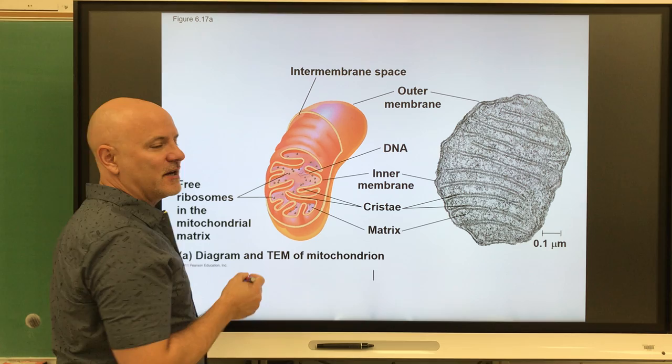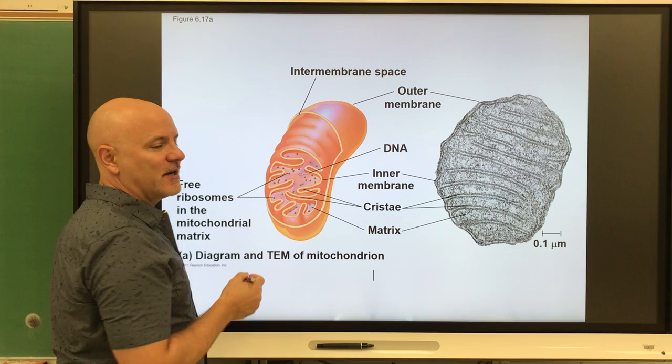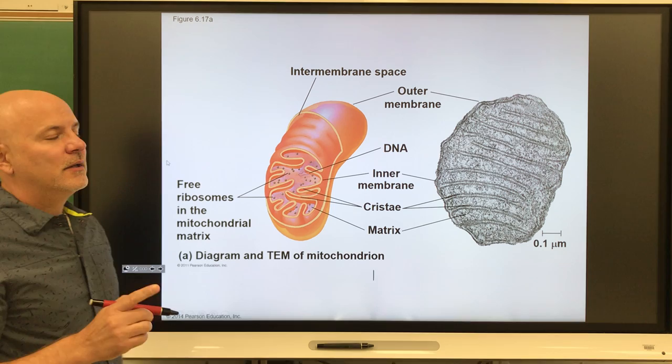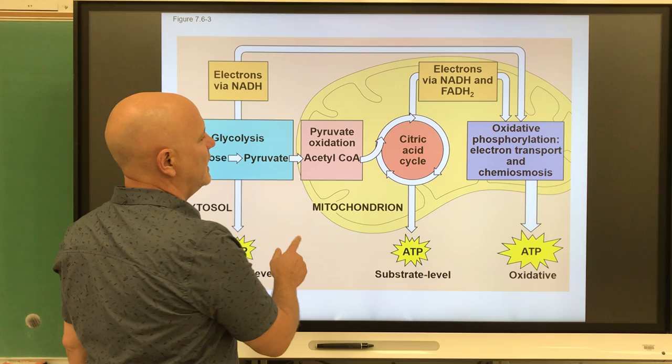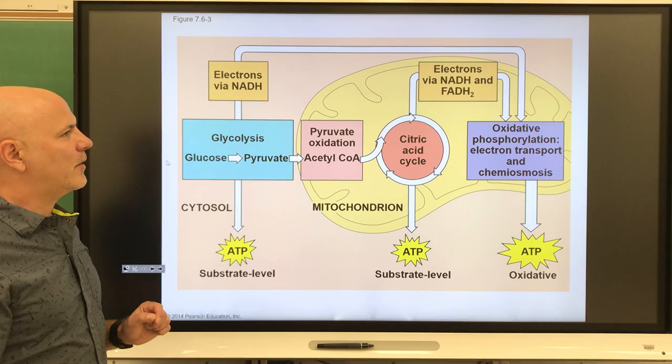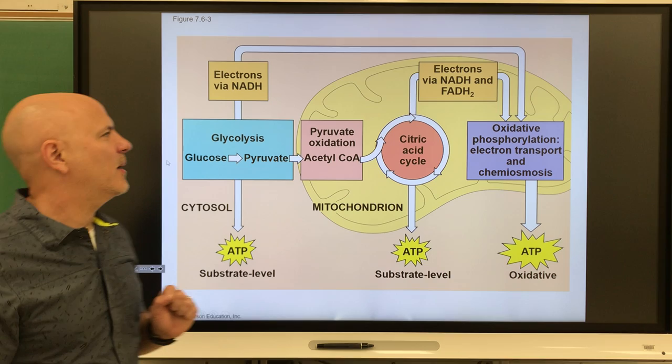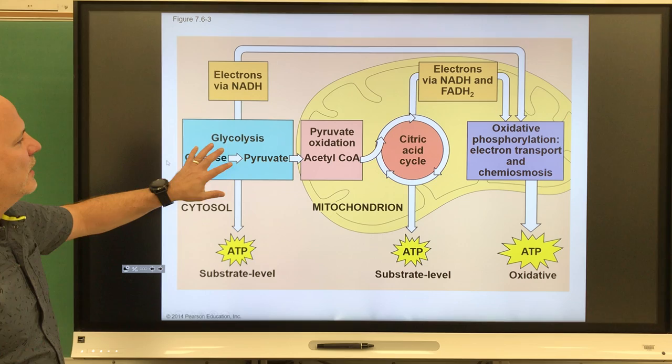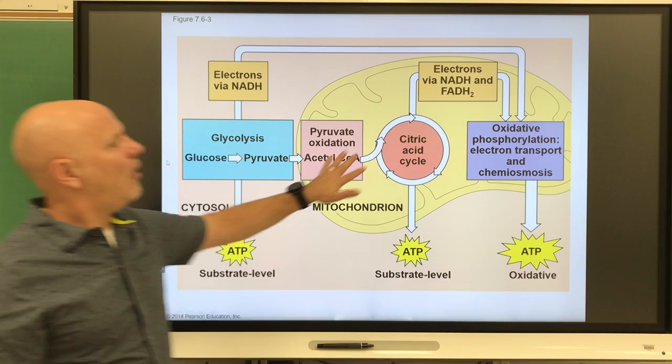We also have a space in between the two membranes known as the inner membrane space. The first step in aerobic respiration is glycolysis. Glycolysis occurs outside of the mitochondria; all the other reactions are going to occur within the mitochondria.